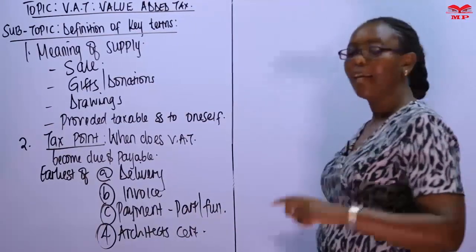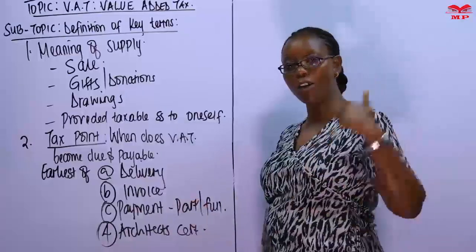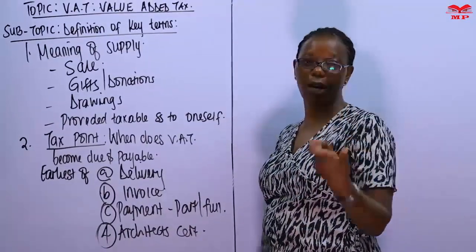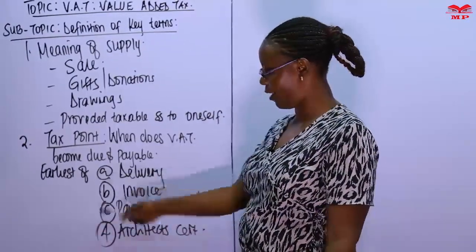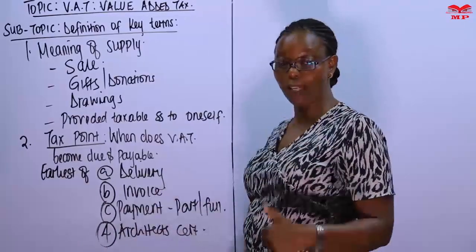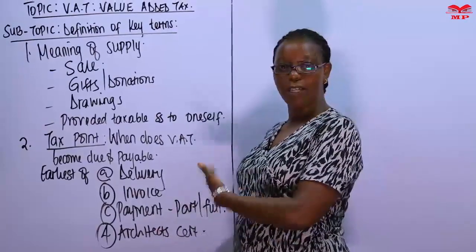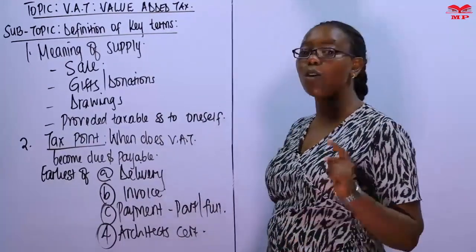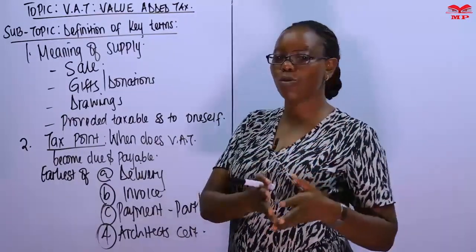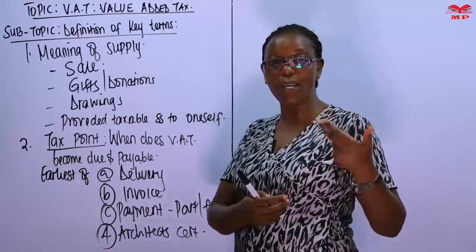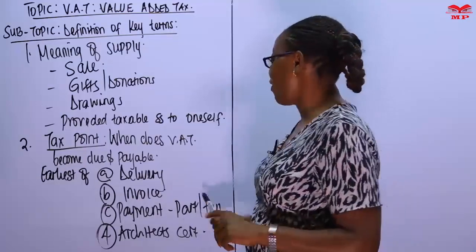Remember, in the month that any of these happens, you're going to account for VAT. Whatever comes first out of these four is when you're going to account for VAT. So for delivery, you will have a delivery note as proof of delivery. You're not looking at the terms — it's only that you sold or delivered goods to a customer. All goods were delivered to you. Remember, it's got to be a business, not individuals.